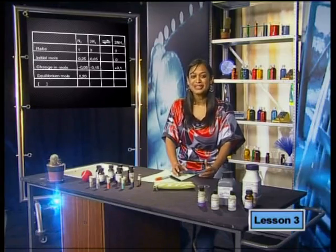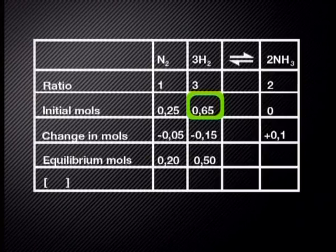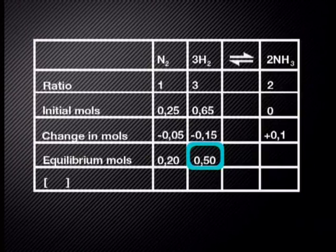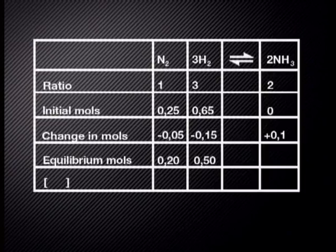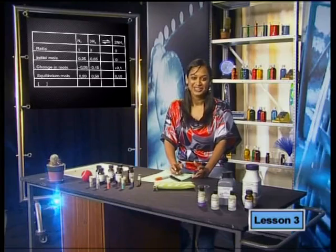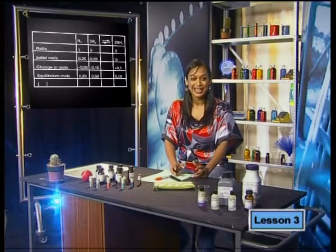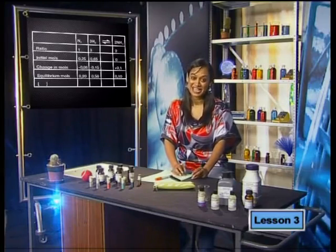Hydrogen at equilibrium is 0.65 − 0.15 = 0.50 moles. Ammonia at equilibrium is 0 + 0.10 = 0.10 moles. All Kanye and Rahim need to do now is complete the RICE table by calculating concentrations, then work out the equilibrium constant.